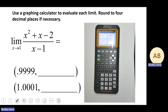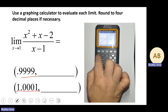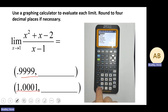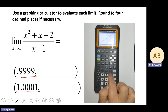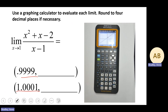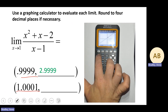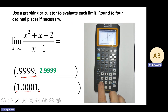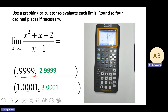That means we go a hair to the left of 1 and a hair to the right of 1. Slightly to the left of 1 would be 0.9999, and slightly to the right gives us 3.001. We can see that as we come from the left and from the right, they are converging on the same output value of 3.